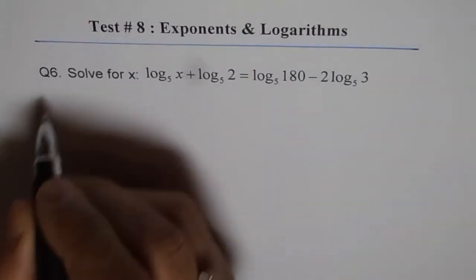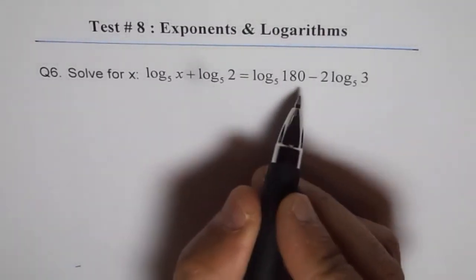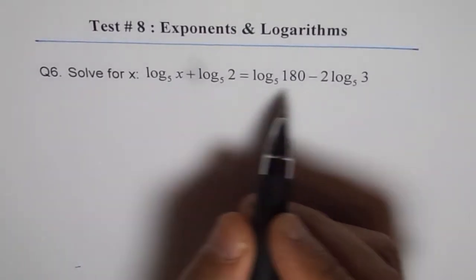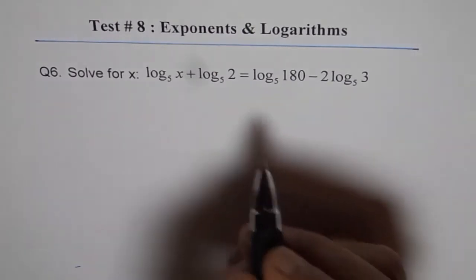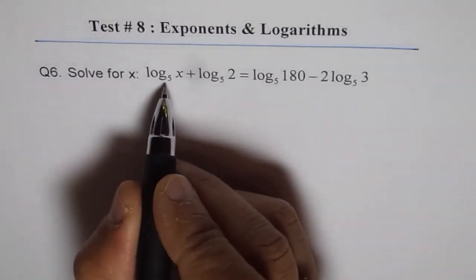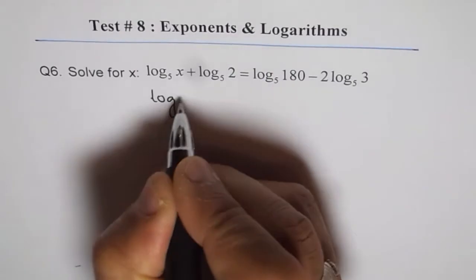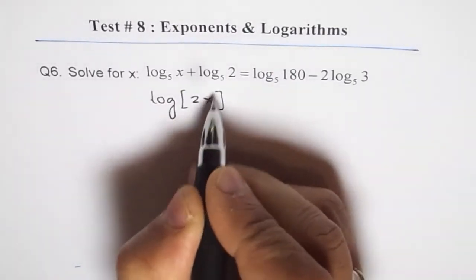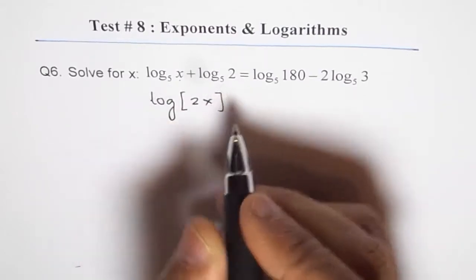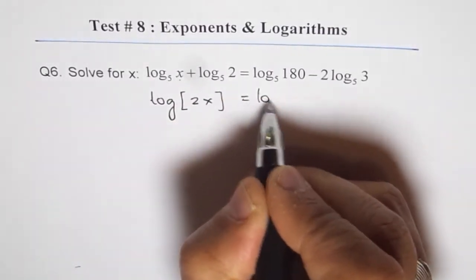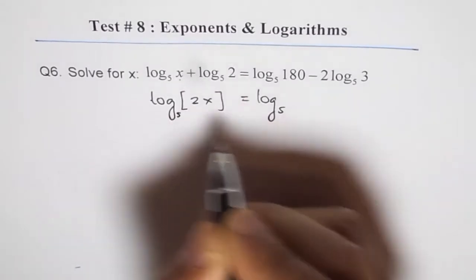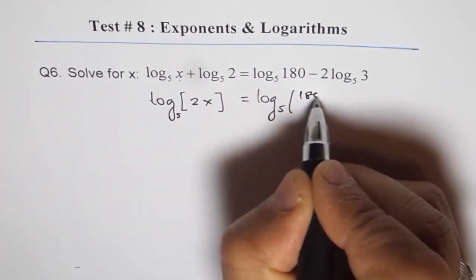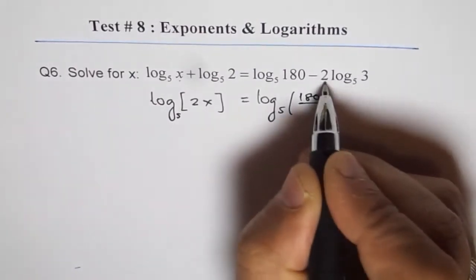So we can rewrite this — because these are product and sum — and figure out what the solution is. We can keep the left side and right side separate. The left side is equal to log base 5 of 2x, since we can multiply x and 2 as they have the same base. The right side will be log to the base 5 of 180 over 3 squared.